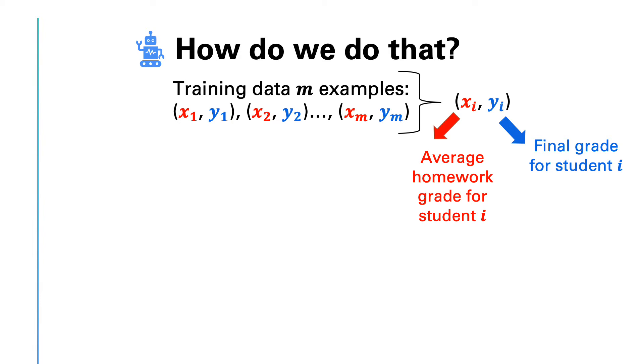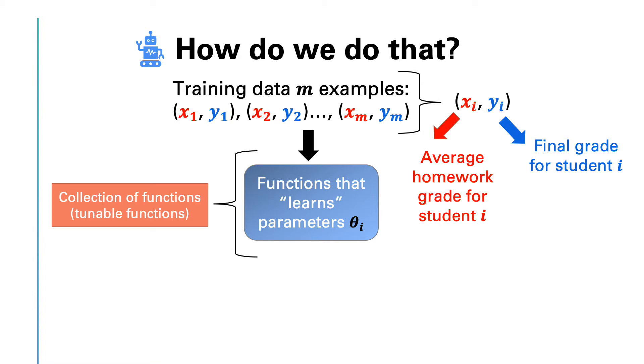Now, we need to have a tunable box that learns the parameters of the function. This means that you have a tunable function. You can change the function by changing its parameters. Based on the training data, you can select the best tuning parameters to fit the function to the training data. Another way of thinking about this is that the box contains a large number of functions and based on the training data, you choose one of them.